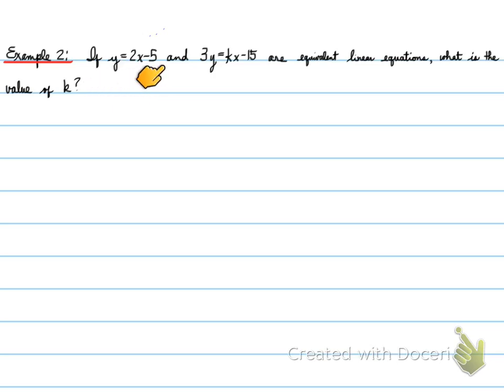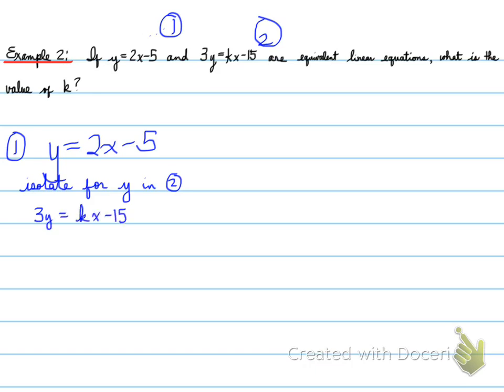Well again, we see this form and we see this form, and note they're in different forms. So what's important is that you put it in the proper form, y equals mx plus b. So the first equation is going to be y equals 2x minus 5. The first equation is right. The second equation, we're going to isolate for y in equation number 2. Isolate for y. Divide both sides by 3. That means 3y over 3 is equal to y, and k over 3x and minus 15 over 3, which should be minus 5.